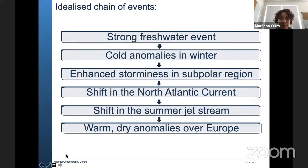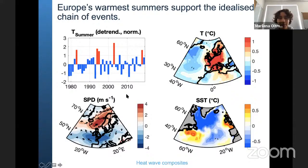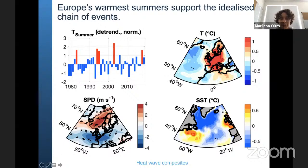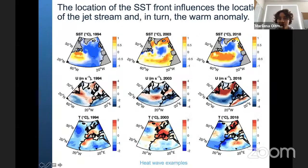This is an idealized chain — some feedbacks are skipped — but it explains to first order the changes observed over the North Atlantic and climate variability. We can also work the other way around: start from warm and dry anomalies over Europe and look at the associated ocean and atmosphere conditions. A composite of strong heat events over Europe — detrended so we don't just see peaks in recent years — shows they are associated with this jet stream shift and with fresh and cold anomalies. Looking at three warm summers over Europe individually reveals large differences between them.